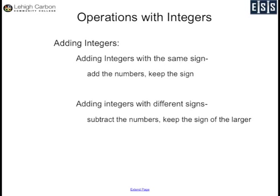First, with adding integers: you add integers with the same sign by adding the numbers and keeping the sign. So a positive plus a positive is a positive, and a negative plus a negative equals a negative.